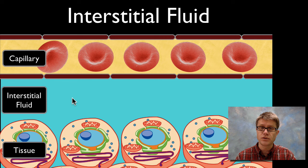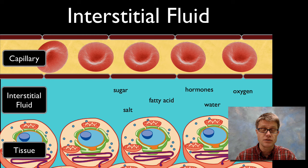So what's going to be in the interstitial fluid? There's going to be a lot of water, but we're also going to have sugar, salt, hormones, neurotransmitters, carbon dioxide, and oxygen. It serves as a conduit between the capillary and the tissues themselves.